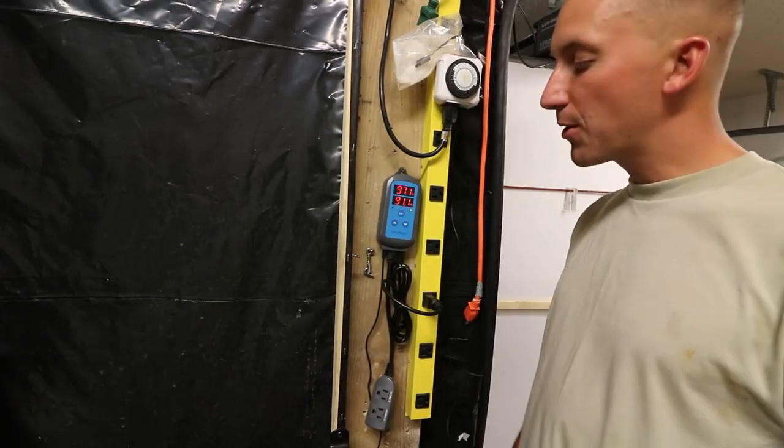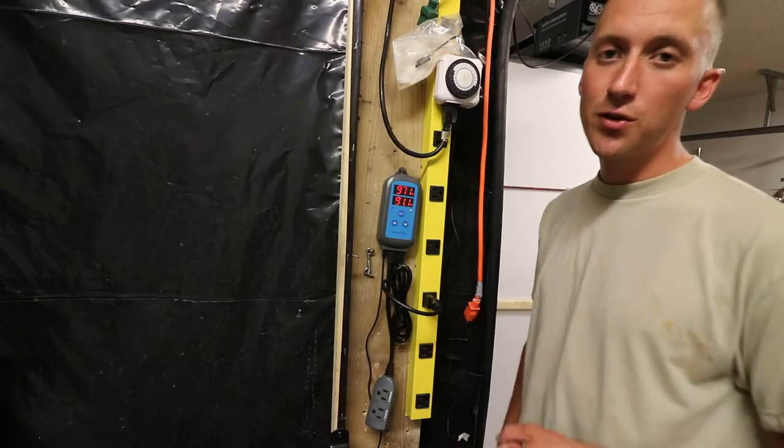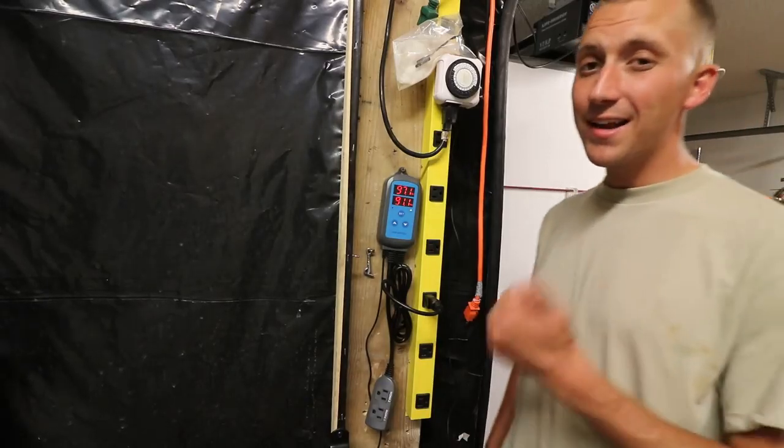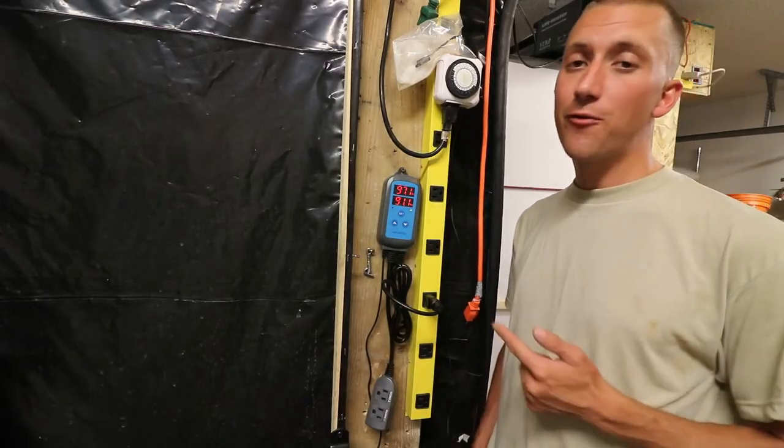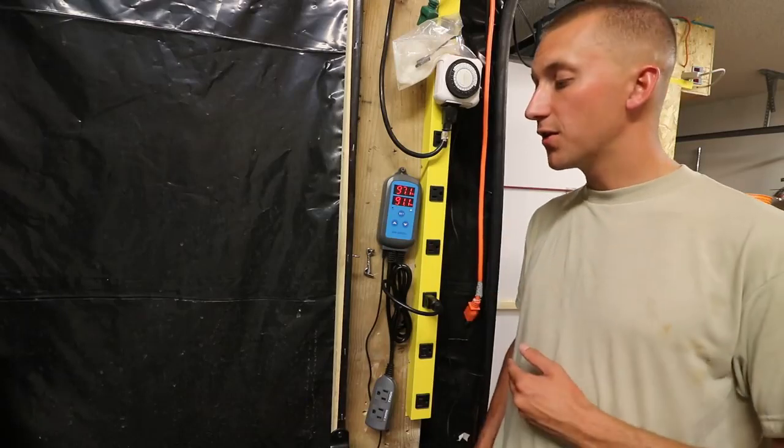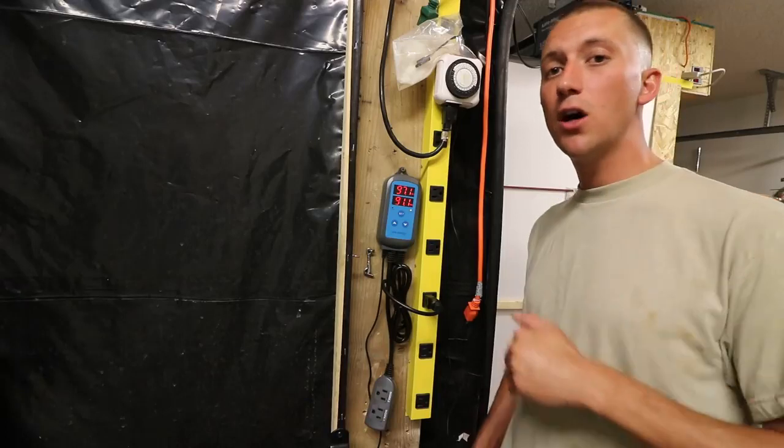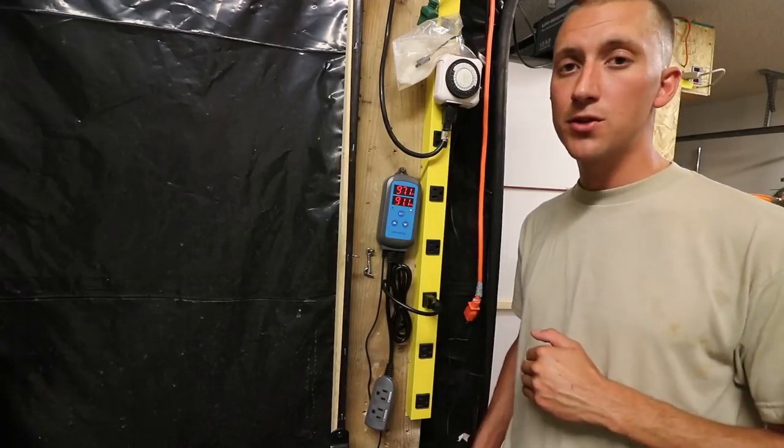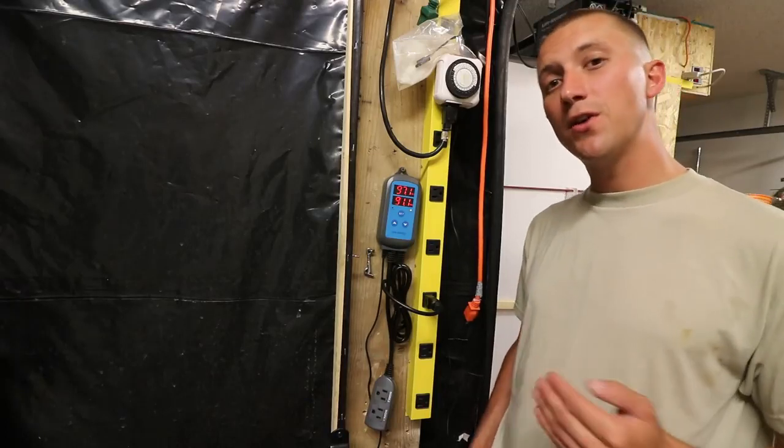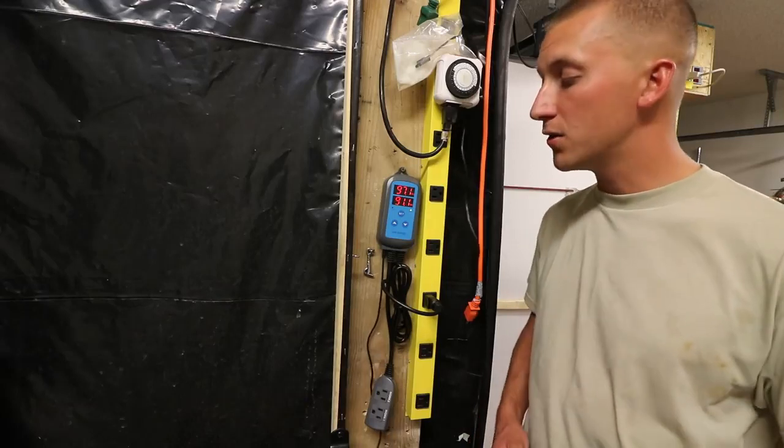Alright, today we're going to be talking about the Inkbird IHC 200 Digital Humidity Controller. We're going to talk about how to calibrate it and how to set it up for a mushroom grow with the settings. So this is available on Amazon. The link is below on kit.com/MyersMushrooms. Please buy it through there so you can contribute to my channel. Thank you.